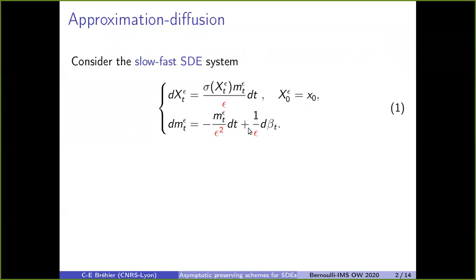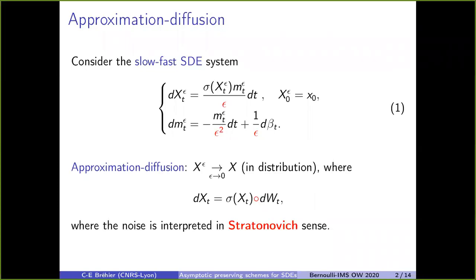Epsilon is a small parameter. M Epsilon is an Ornstein-Uhlenbeck process in dimension one, and X Epsilon is the slowest component in the system. In the right-hand side of the equation, we have M Epsilon divided by Epsilon times DT, multiplied by sigma of X and DT. What happens in this regime is that when Epsilon goes to zero, X Epsilon converges to the solution of a stochastic differential equation: DX equals sigma of X times DW_t, where the interpretation of the noise is in the Stratonovich sense.